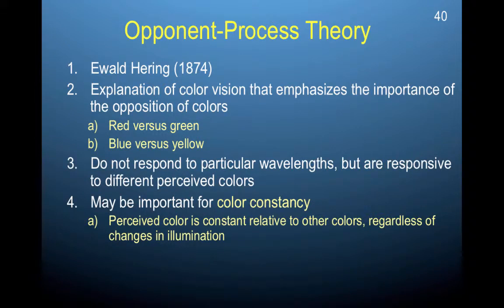Finally, we have opponent process theory, proposed by Hering. This is an explanation of color vision that emphasizes the importance of the opposition of colors — red versus green, and blue versus yellow. This proposes that we don't respond to particular wavelengths, but we are responsive to different perceived colors. This may be really important for color constancy — perceived color is constant relative to other colors, regardless of changes in illumination. Trichromatic theory can't account for the fact that once we have a color permanence surrounding objects, I will perceive a jacket as that color regardless of whether I'm partially illuminated, in shadows, or in the dark.